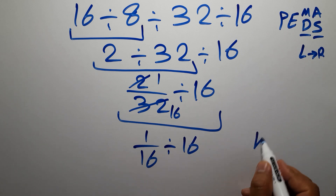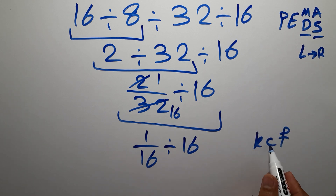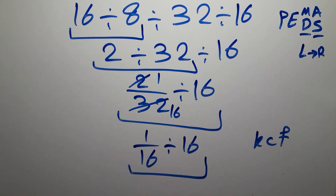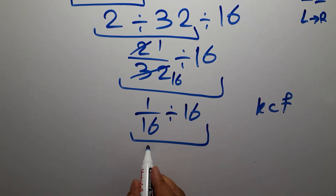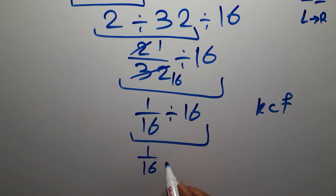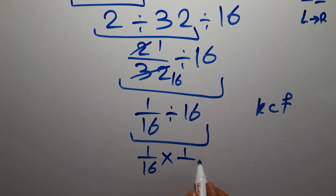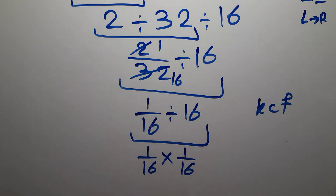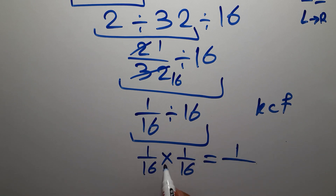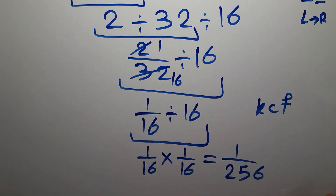According to the KCF rule — K stands for Keep, C stands for Change, F stands for Flip — we keep the first fraction 1 over 16, change the division to multiplication, and flip the second fraction to get 1 over 16. So we have 1 over 16 times 1 over 16, which equals 1 over 256. This is our final answer.